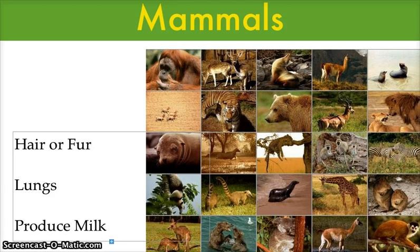Most mammals give birth to live young. After the animals are born, they feed on milk made by the mother's body. Most mammals learn from their parents how to care for themselves.